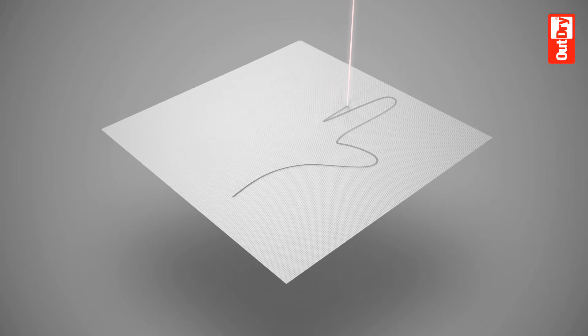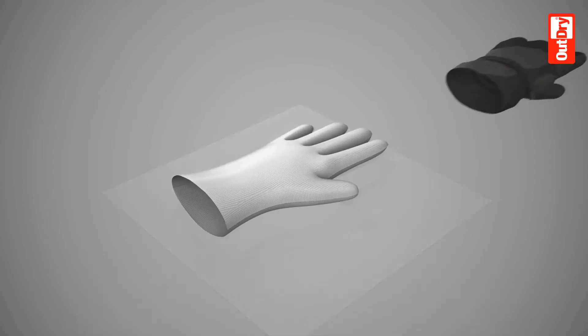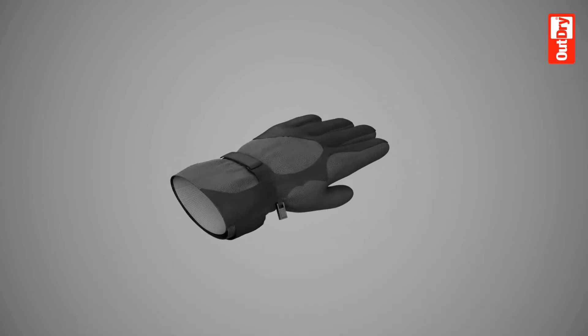The OutDry membrane sheets are cut precisely and welded together to fit the shape of the glove. The membrane is then placed inside the glove shell with a metal plug to seal the cuff.